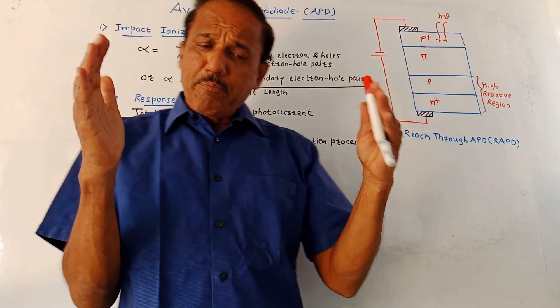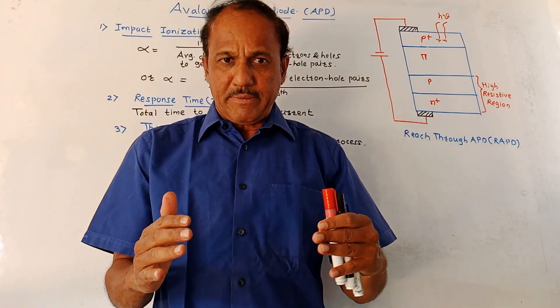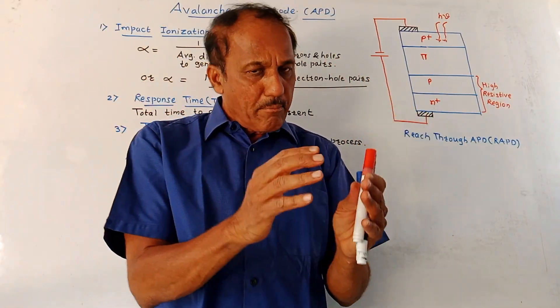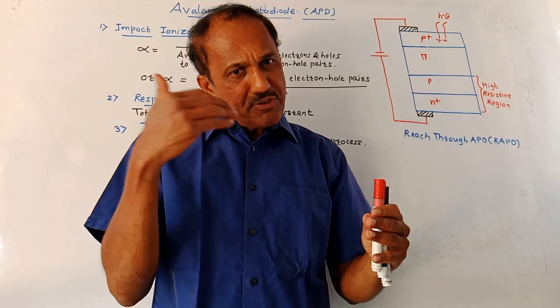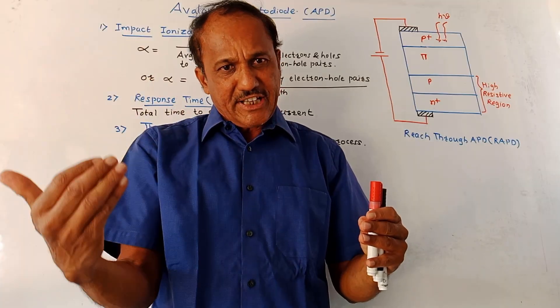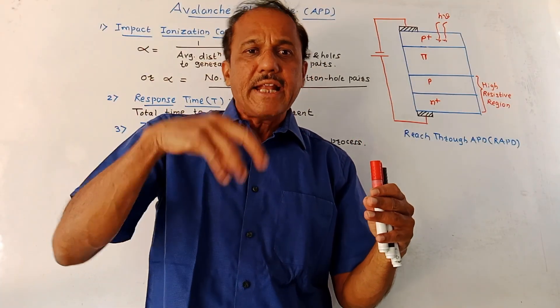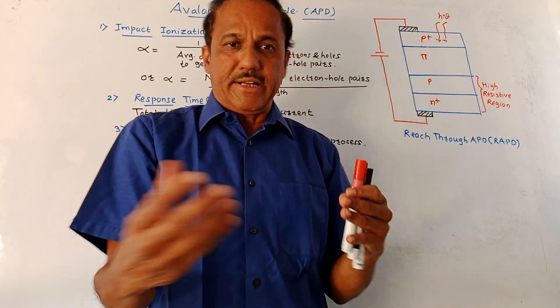What is the basic concept? Like the normal avalanche process, here multiplication of charge carriers takes place, because of which the gain is provided.